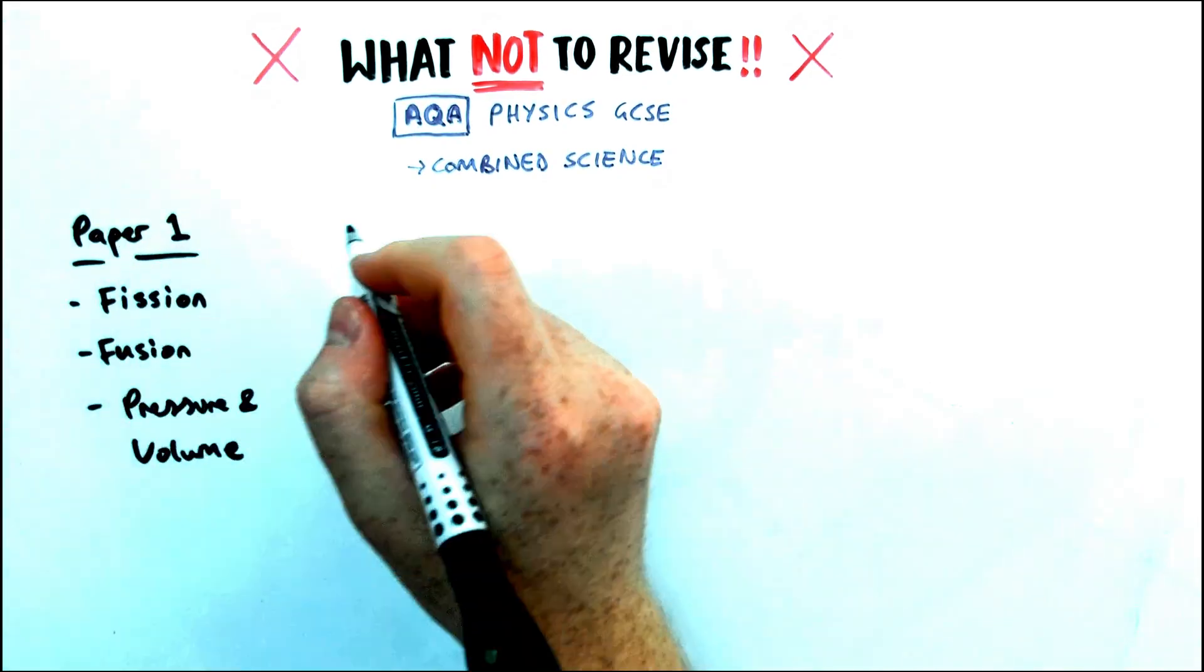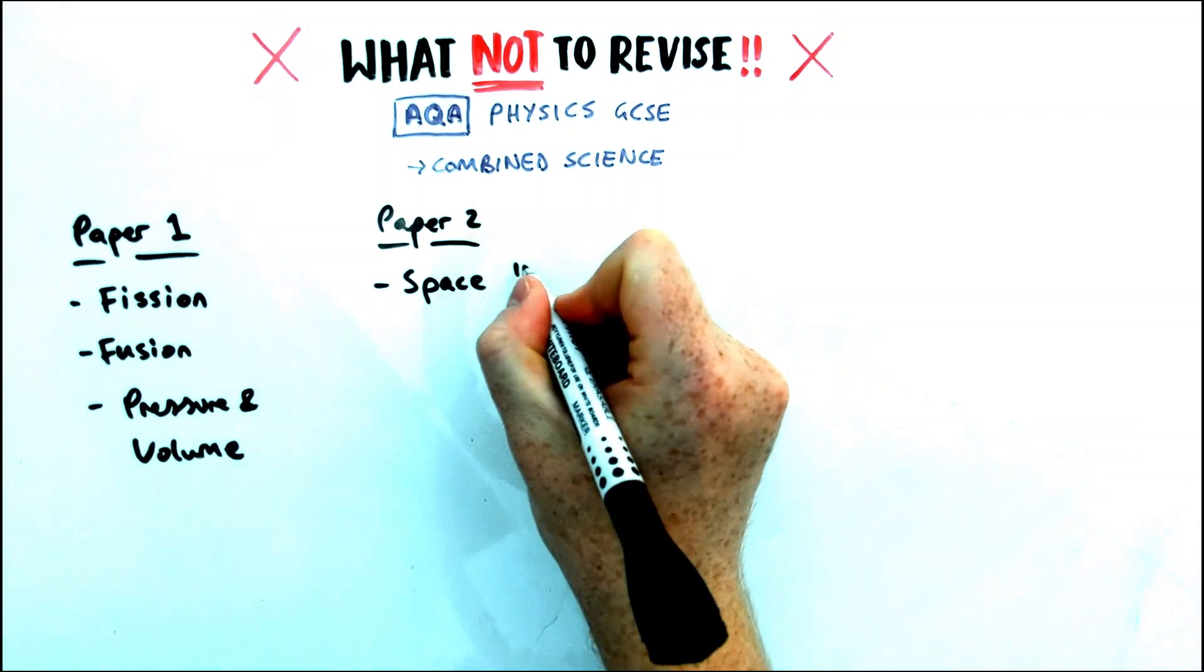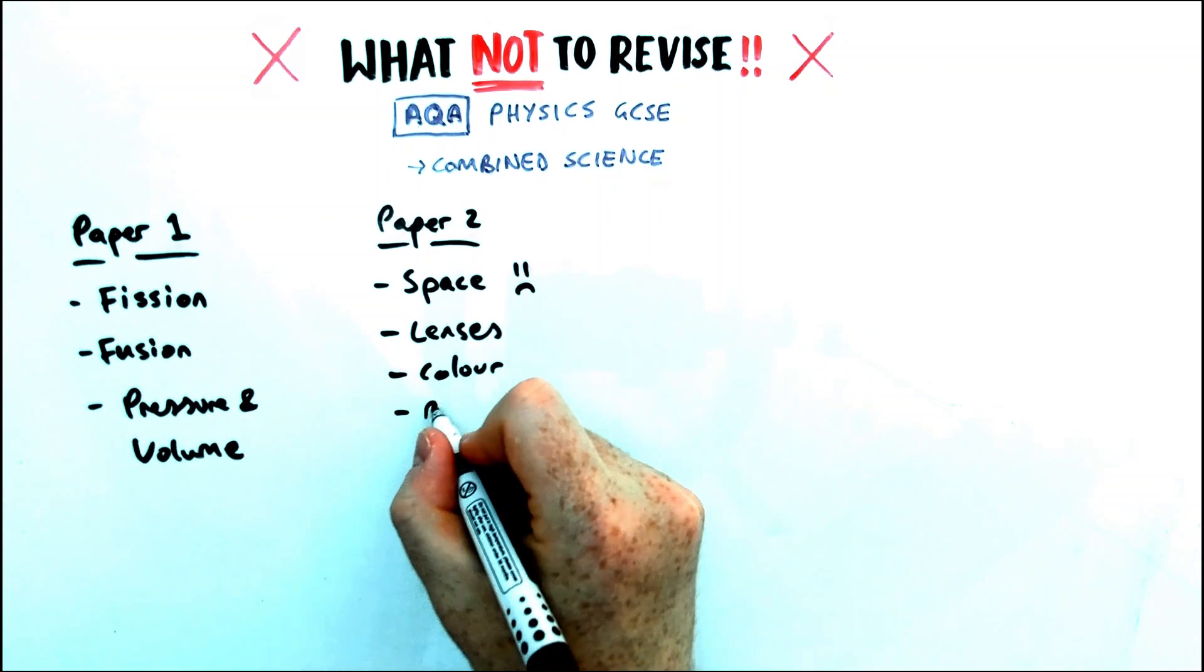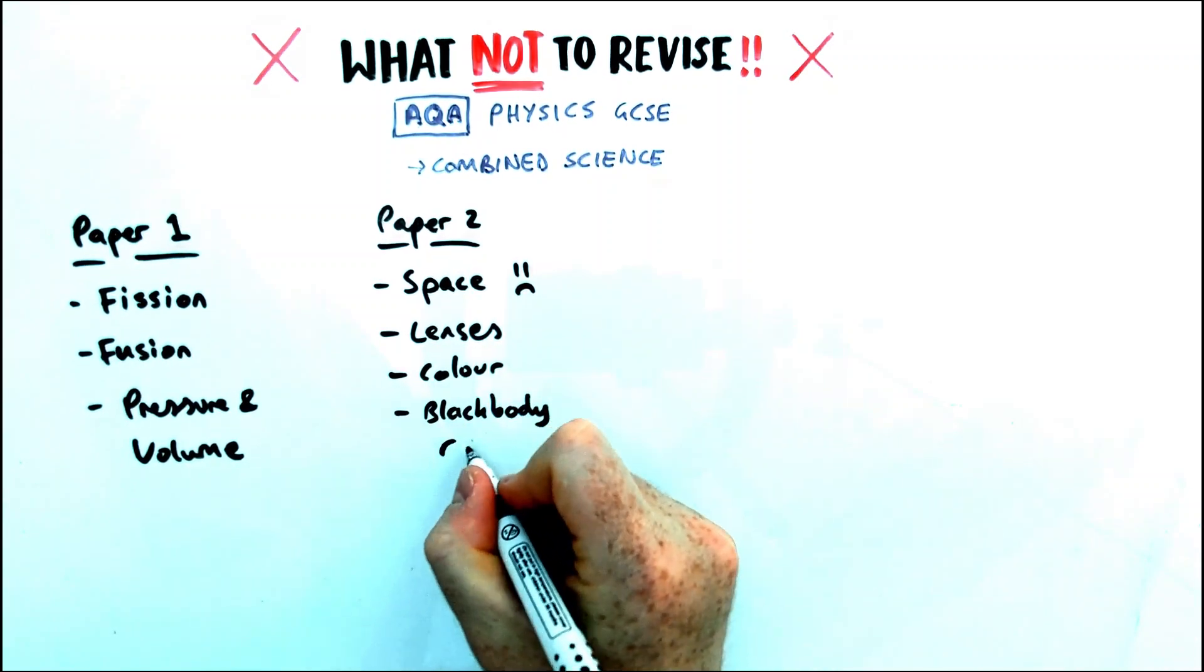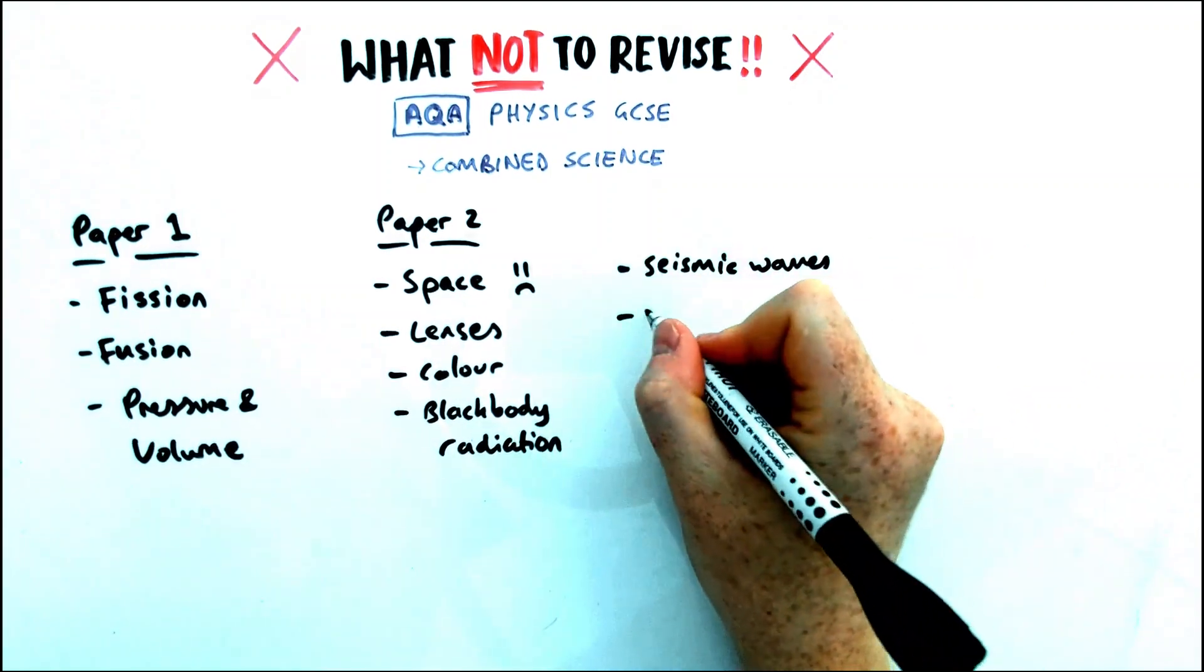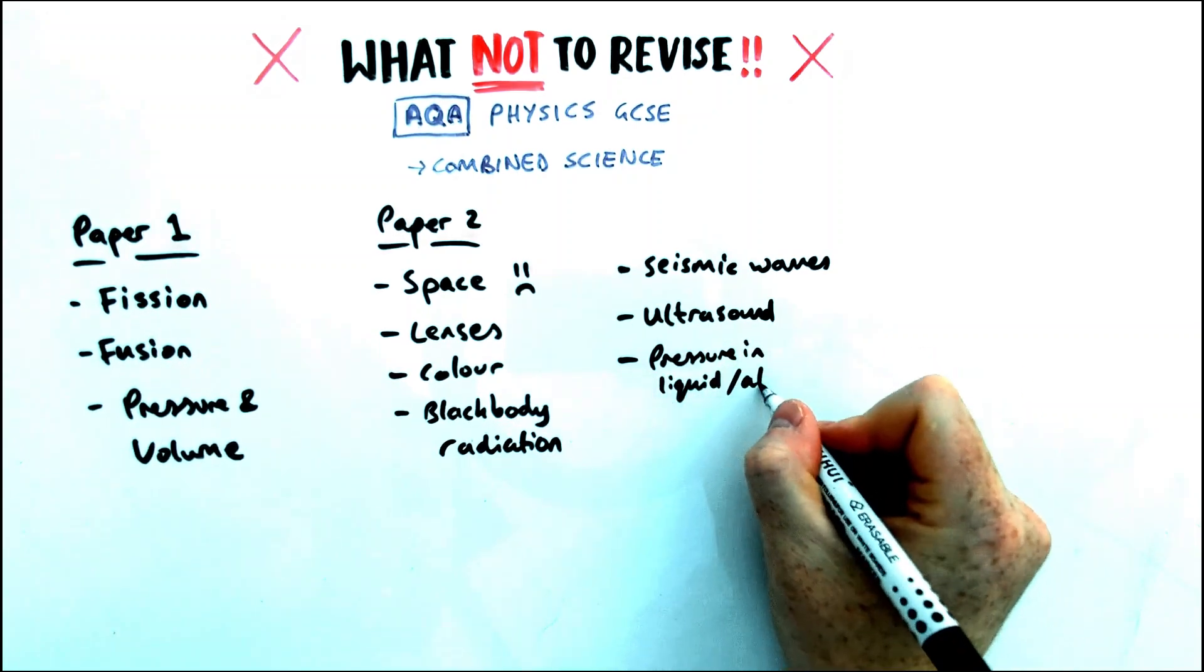For paper two, there is an awful lot. Now, this doesn't refer to higher tier or foundation tier things, just separate or combined. So in paper two, you don't need to know anything about space, which I think is really bad and a bad decision, but that's for another video. You don't need to know about lenses, about colour, about black-body radiation, seismic waves, ultrasound, pressure in liquids or in gases.